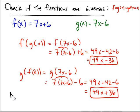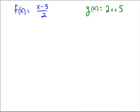In both cases we did not get x. These are not inverses. So let's do another example, try another example: f of x equals x minus 5 over 2, and g of x equals 2x plus 5.